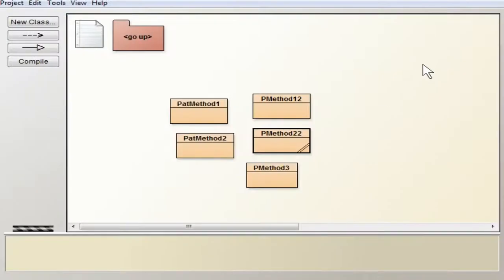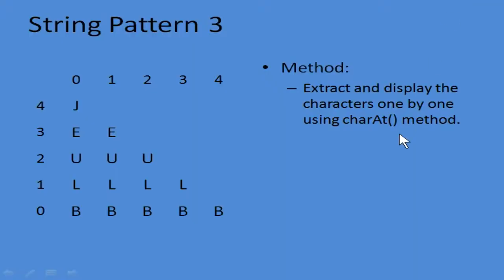Now let's go to pattern 3. Here the full string is not displayed as a string; you can see individual characters. The first row has J once, the second row has ee (in reverse order), the third row has uuu, the fourth has llll, and the fifth has bbbbb. For this pattern, the second method (substring) will not work because you are not extracting a full string segment — you are extracting only individual characters. So only the first method using charAt can be used here.